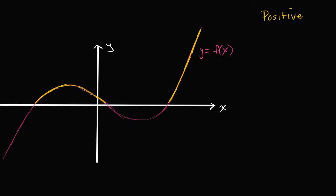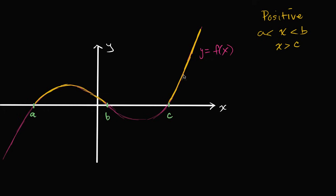And if we wanted to write those intervals mathematically, let's say that this point right over here is x equals a, this right over here is x equals b, and this right over here is x equals c. Then it's positive as long as x is between a and b. At x equals a or at x equals b, the value of our function is zero, but it's positive when x is between a and b, or if x is greater than c.